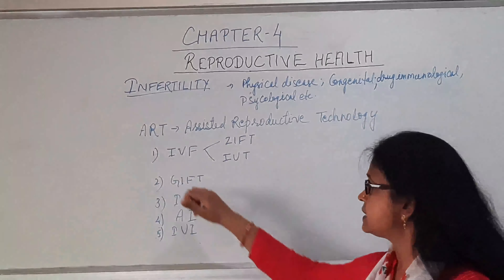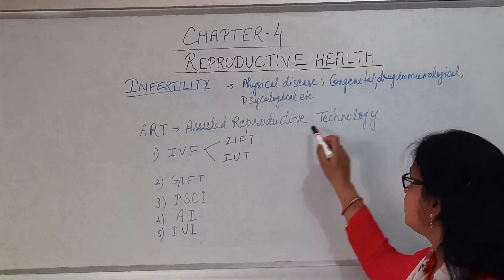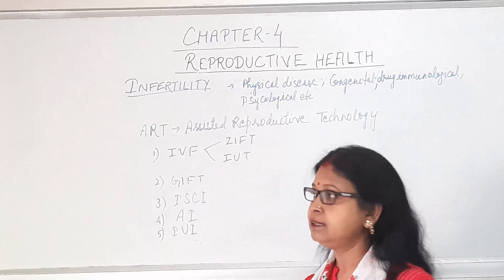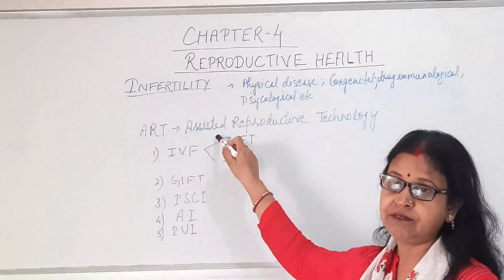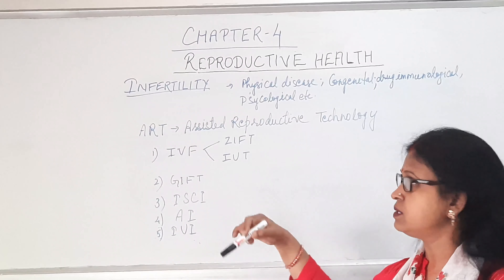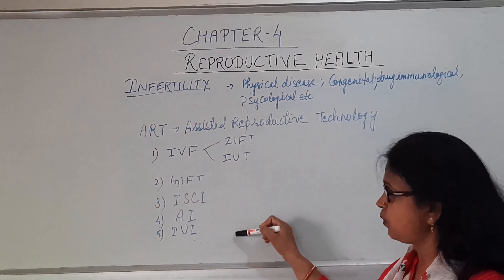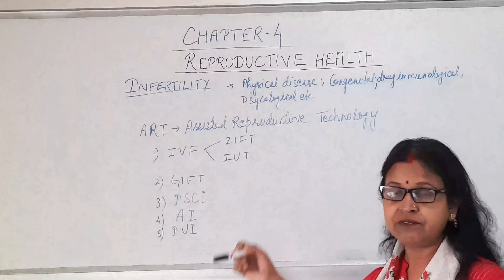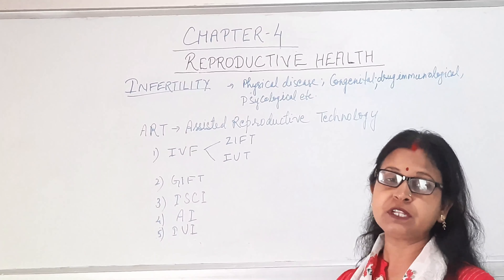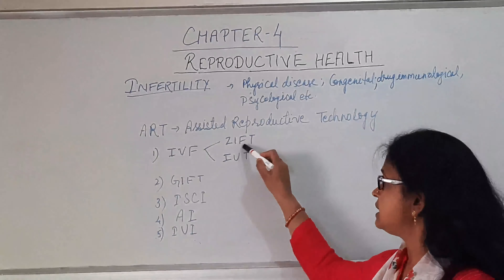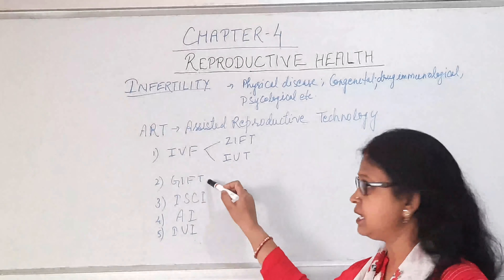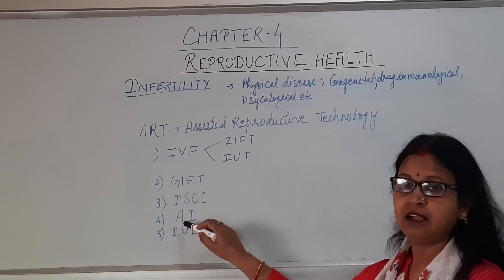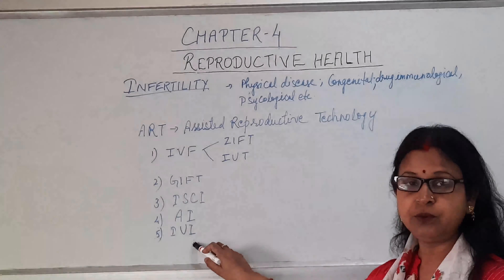In such cases, ART, that is Assisted Reproductive Technology, can be a boon for those infertile couples, helping them have a child even in later years. The following types are: first is IVF, which is of two types depending upon at which stage the zygote is introduced into the mother's body — that is ZIFT and IUT — second is GIFT, third is ICSI, then AI, and fifth is IUI.